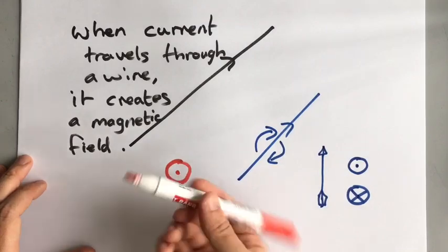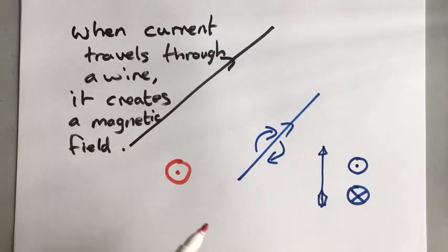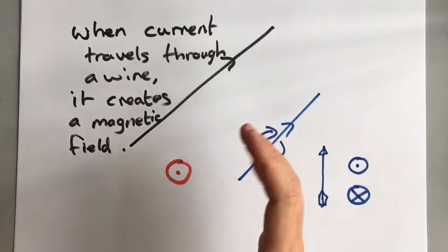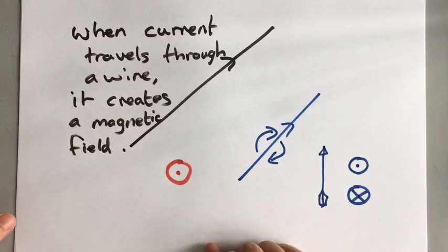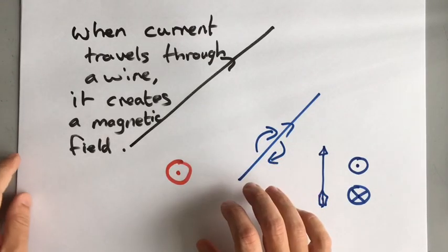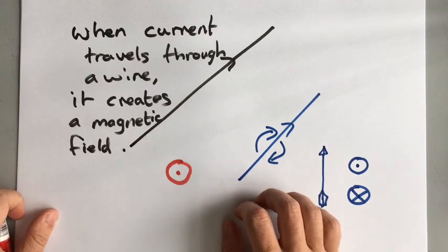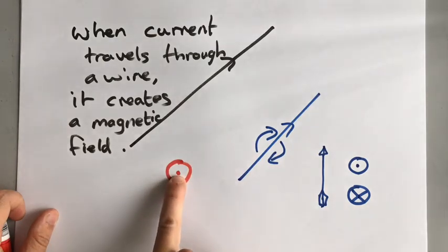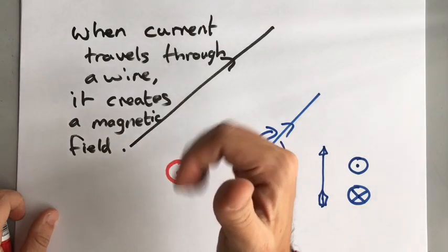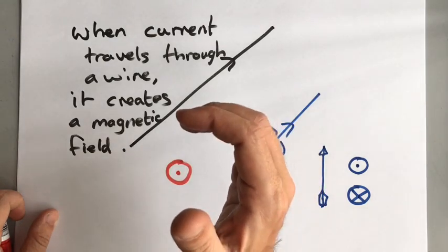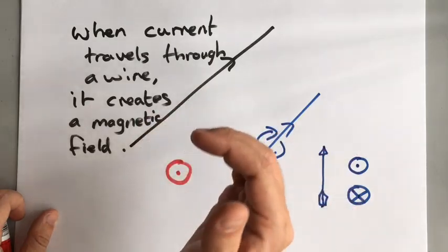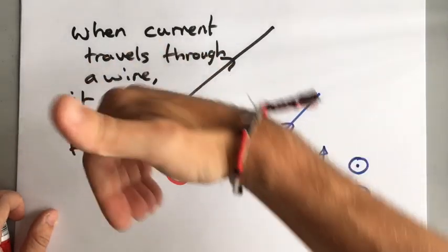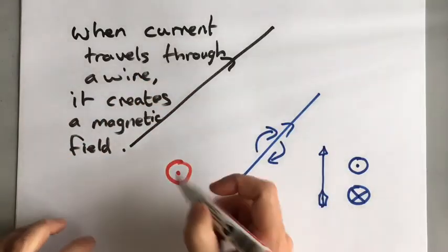So if we take a wire coming out of the page, we can use our right hand — it's important to use your right hand — to decide which way the magnetic field created by the current is travelling. If you point your thumb in the direction of the current (in this case out of the page) and bend your fingers, that is the direction of the magnetic field. So the magnetic field is going around the wire like that.